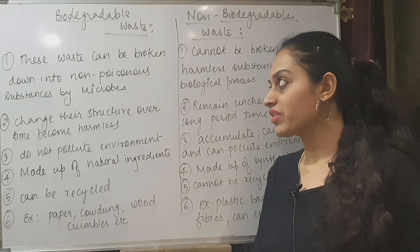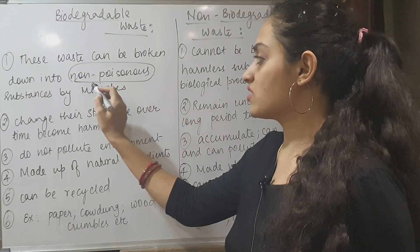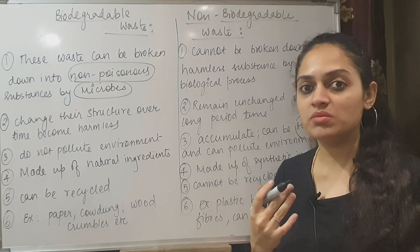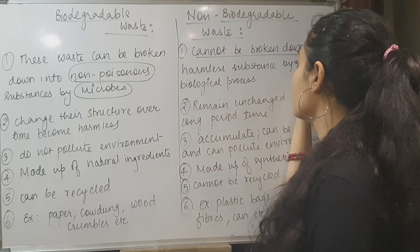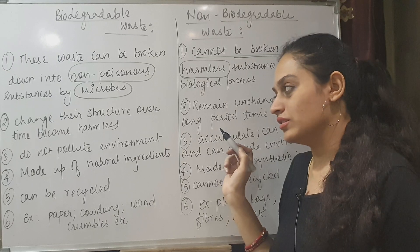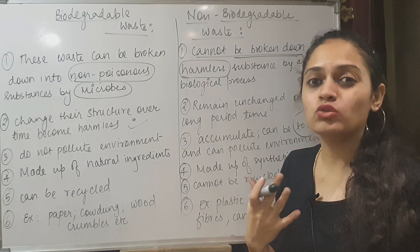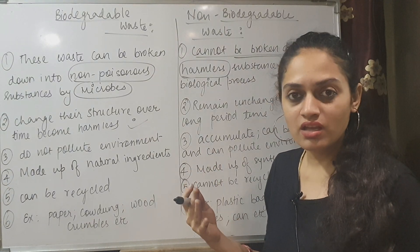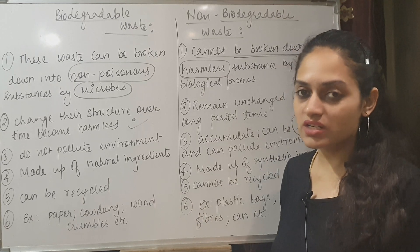Biodegradable waste can be broken down into non-poisonous substances by microbes, so it causes no harm. Non-biodegradable waste, on the other hand, cannot be broken down into any harmless substance. Biodegradable waste, when kept in the ground, slowly changes its structure over time and turns into the least harmful waste.